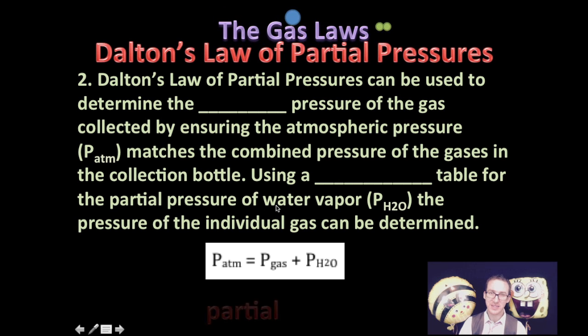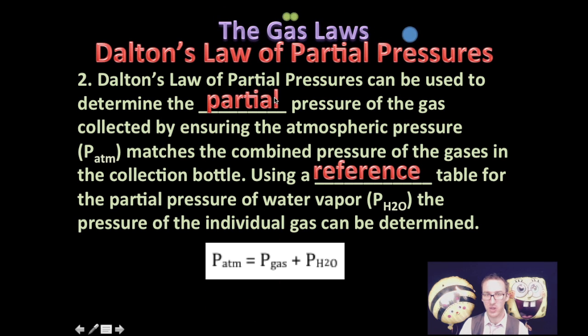So a classic way to apply Dalton's law of partial pressures is to determine the partial pressure of a gas that we're collecting in the lab. And we can do that by ensuring the atmospheric pressure matches the combined pressure of the gases in the collection bottle. And then by using a reference table for the partial pressures of water vapor, we can easily determine the pressure of the individual gas that was collected.